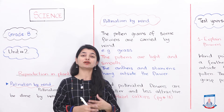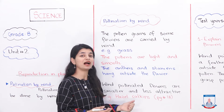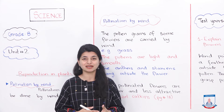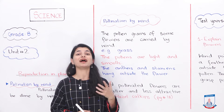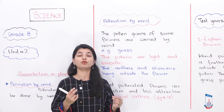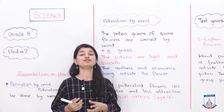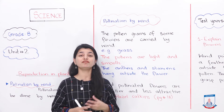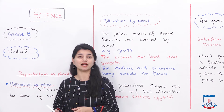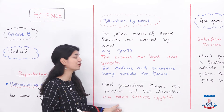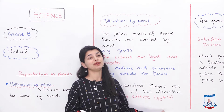Because they are not supposed to attract insects. In nature, things are designed according to their function. Their function is to do pollination through wind, so the anthers and stamens are outside, the pollen is light and smooth, but they are not so beautiful or attractive compared to insect pollinated plants. You can also see an example of hazel catkins on page number 18.